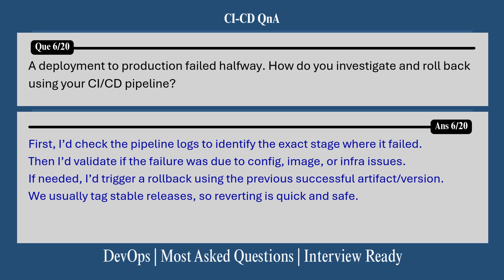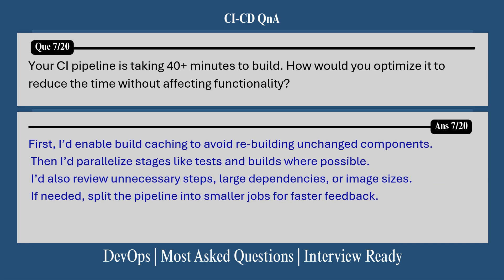Question 6: A deployment to production failed halfway — how do you investigate and roll back using your CI/CD pipeline? First, I would check the pipeline logs to identify the exact stage where it failed. Then I would validate if the failure was due to a config, image, or infra issue. If needed, I would trigger a rollback using the previous successful artifact or version. We usually tag stable releases so reverting is quick and safe.